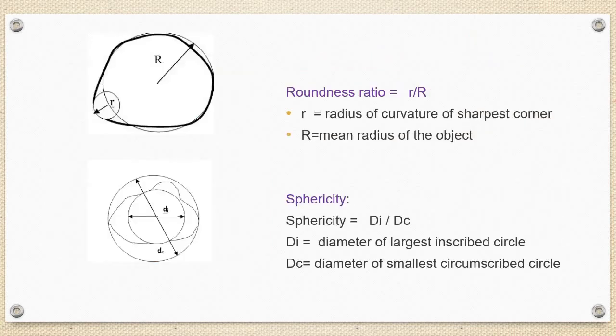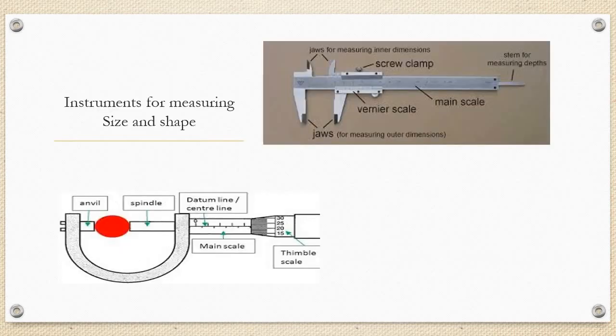Roundness ratio is defined as the radius of curvature of the sharpest corner to the mean radius of the object. Whereas, sphericity is the diameter of the largest inscribed circle to the diameter of the smallest circumscribed circle. Apart from which, we could also use instruments for measuring the size and shape which include the vernier caliper and the screw gauge.